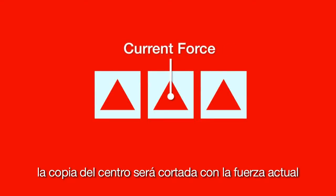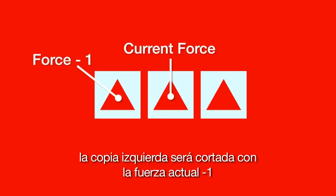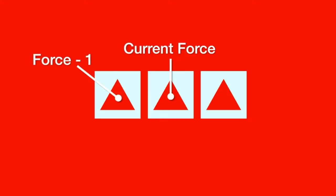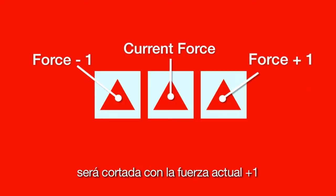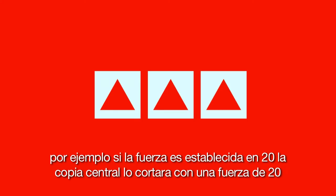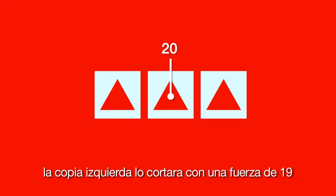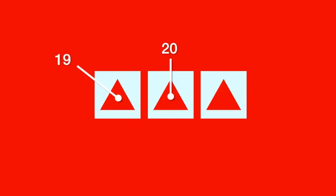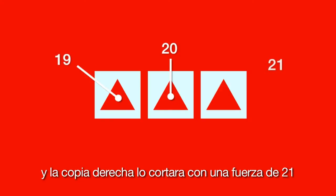The right arrow key will cut three patterns. The middle pattern is cut at the current force, the pattern to the left is cut at the current force minus one, and the pattern to the right is cut at the current force plus one. For example, if the force is set to 20, the middle pattern will be cut at force level 20, the left pattern at force level 19, and the right pattern at force level 21.